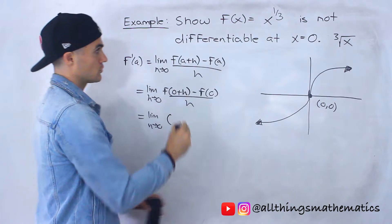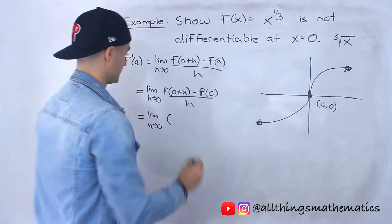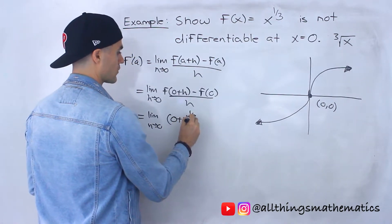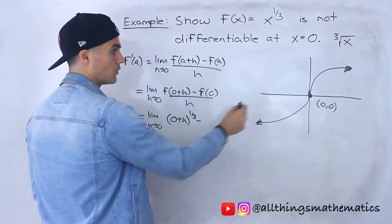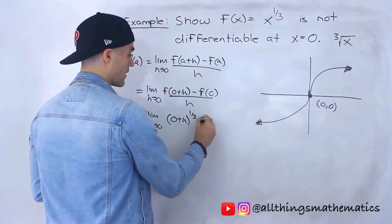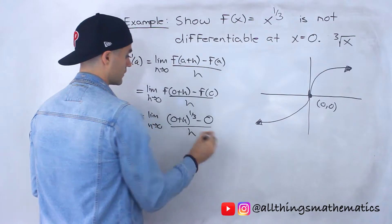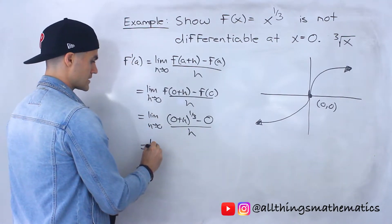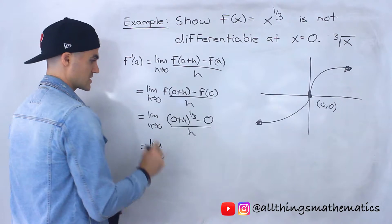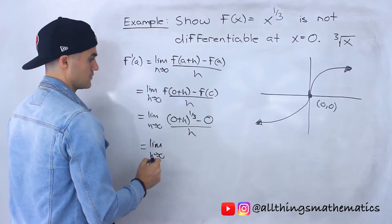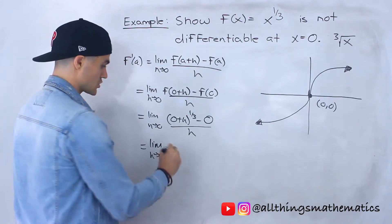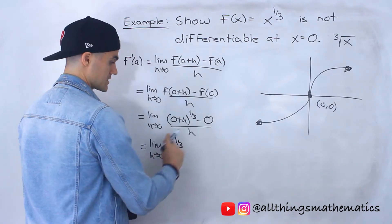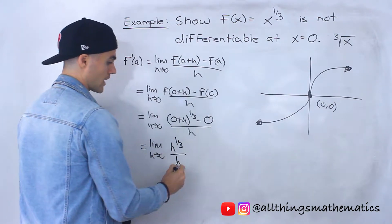We plug in 0 + h for x, so we have (0 + h) to the power of 1/3, minus f(0) which is just 0, all over h. This simplifies: 0 + h is just h, so we have h to the power 1/3, minus 0 — we don't need to write that — all over h.